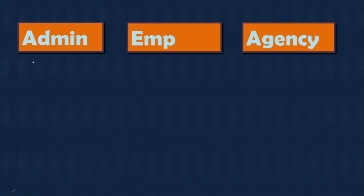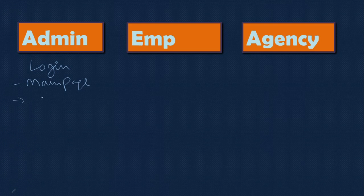In the admin module, admin can log in. After login it goes to the main page. Once you log in, it should go to the main page where you will have options. You can enter the state names, then city names - in each state, what are the city names or district names.